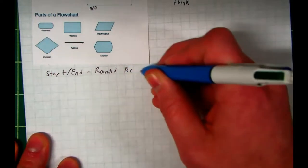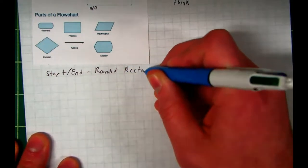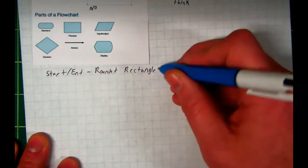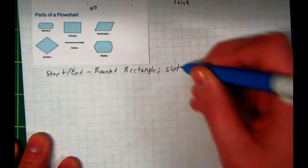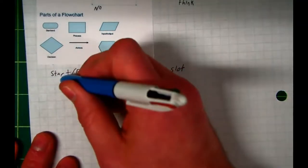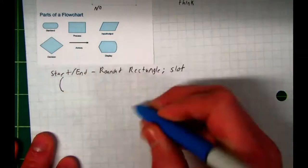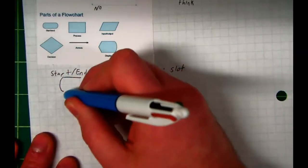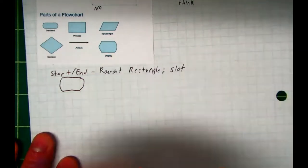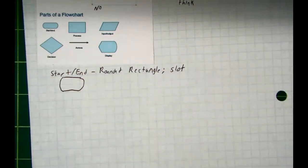If you recall back in Autodesk, we actually defined this shape, or at least Autodesk defined it. It called it just a slot. This shape right here. We go ahead and draw it. We draw ourselves a little semicircle, two horizontal lines coming out of it, and draw another semicircle on the other side. And that's what the start-end shape looks like.